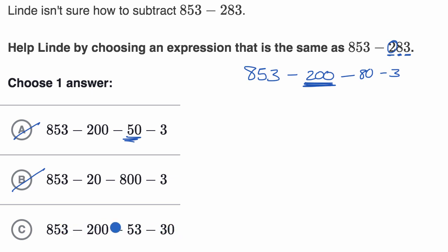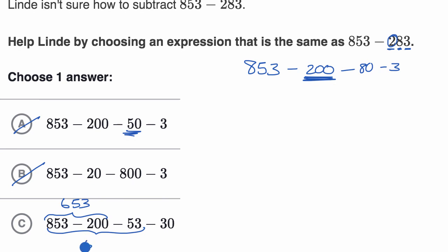Now you might be wondering why would they even do it this way? Well, it's easier to do in your head. 853 minus 200 is 653. You take away 53 from that, and you're going to be left with 600. And then 600 minus 30...